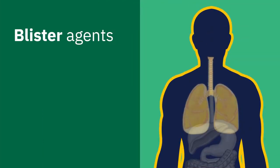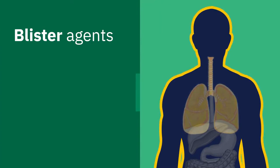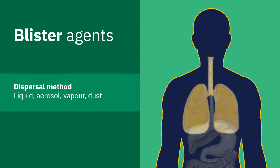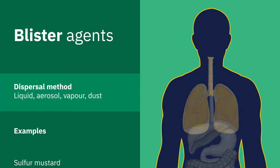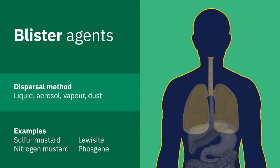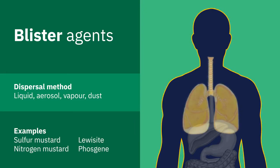Blister agents are oily substances that act first as an irritant and then as a cell poison on skin and when inhaled. They cause life-threatening blisters affecting the eyes, respiratory tract and skin.